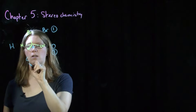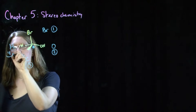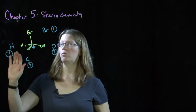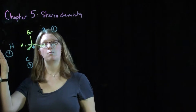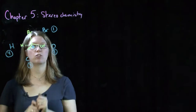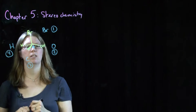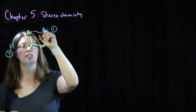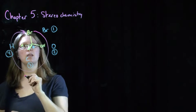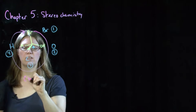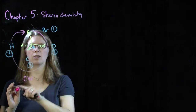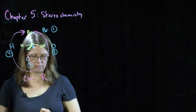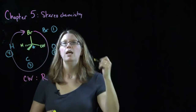Then comes oxygen, carbon, and hydrogen. What we do is take substituent number four and place it in the back — conveniently, it already is drawn with a dashed bond in this molecule. Now if we look at substituents one, two, and three and connect the dots between them, you can see that we're connecting them in a clockwise fashion.